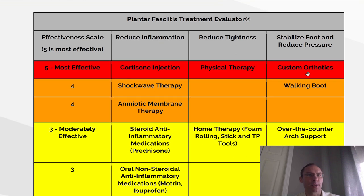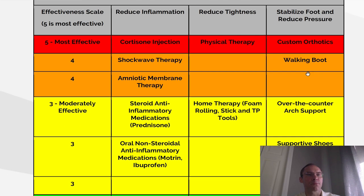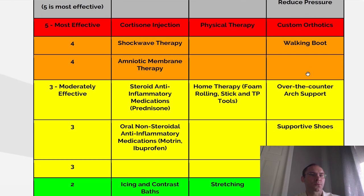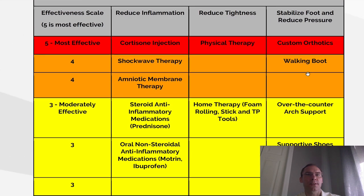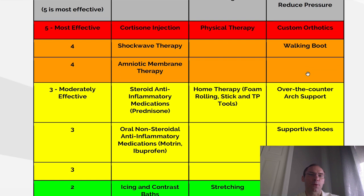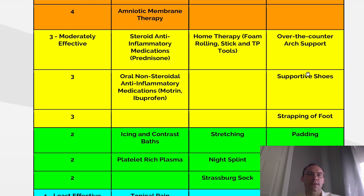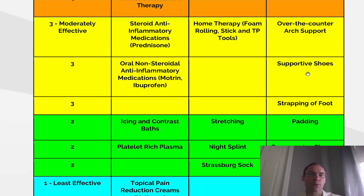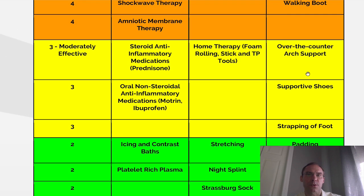The plantar fasciitis treatment evaluator. On the left side you can see effectiveness scaled to 5, with the top being most effective. Under reducing inflammation, the most effective is listed first: cortisone injection, then shockwave therapy, amniotic membrane therapy, steroid anti-inflammatory medications such as prednisone (oral), non-steroidal anti-inflammatory medications such as Motrin and ibuprofen, icing and contrast bath, platelet-rich plasma, and topical pain reduction creams such as Voltaren.